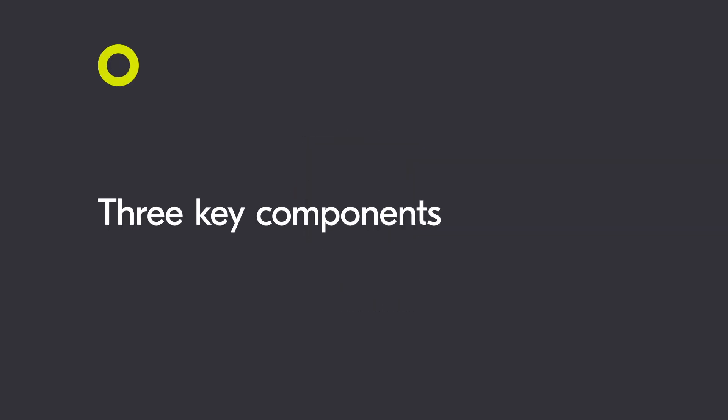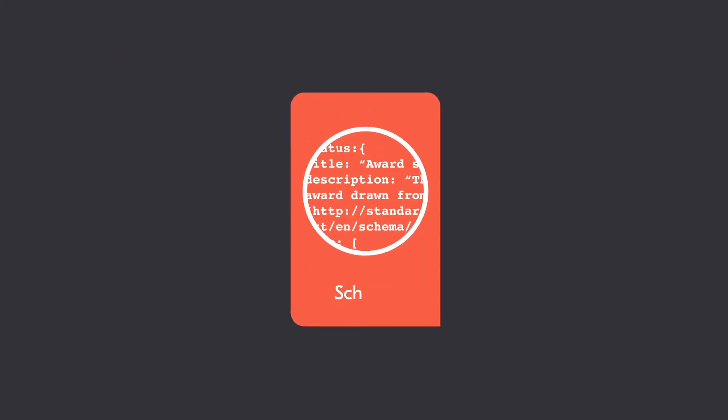There are three key components to OCDS. The schema sets out the fields, structures, data types and validation rules for OCDS data.